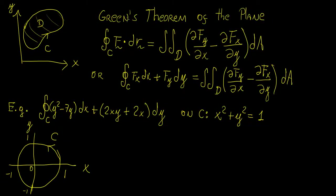In this video we're going to introduce the concept of Green's theorem of the plane. We have some closed curve C that creates a simple domain D, which is just an area on the XY plane. The idea behind Green's theorem is that if you have a two-dimensional vector field with components Fx and Fy, you can evaluate the line integral of that vector field by evaluating a double integral on the closed region D. You take the cross of the partial derivatives, take the difference, and integrate it over the area D, and that gives you the value of the line integral.